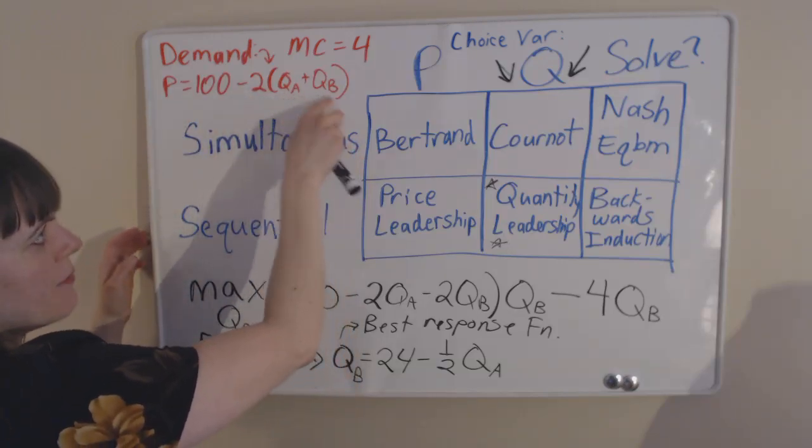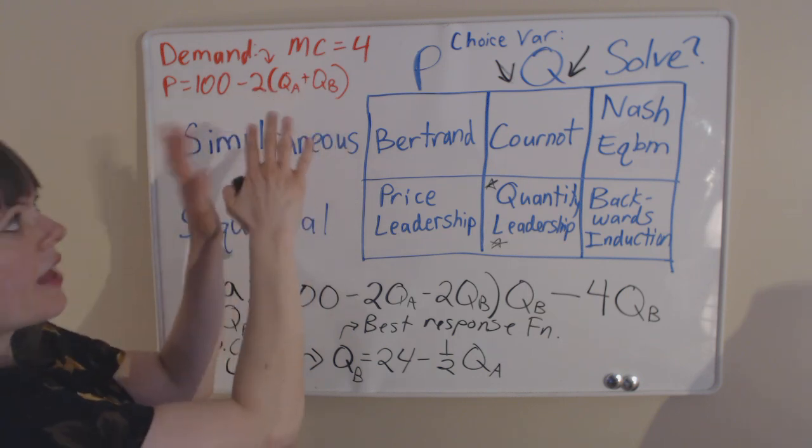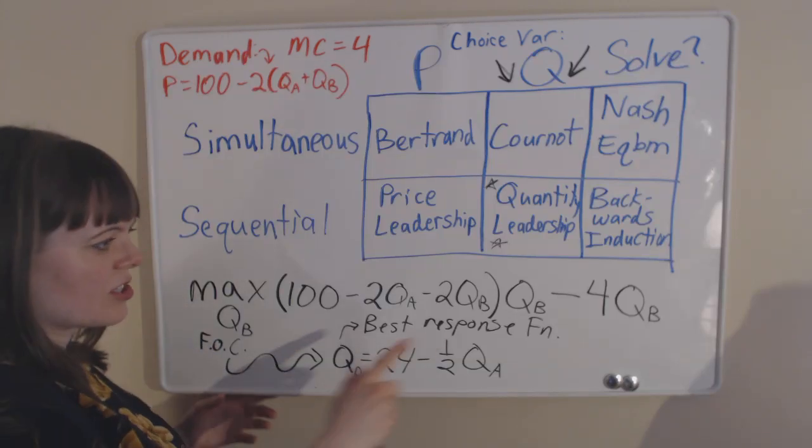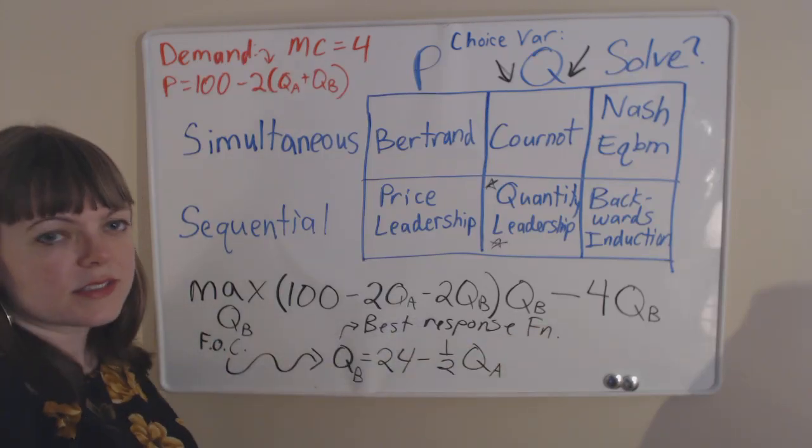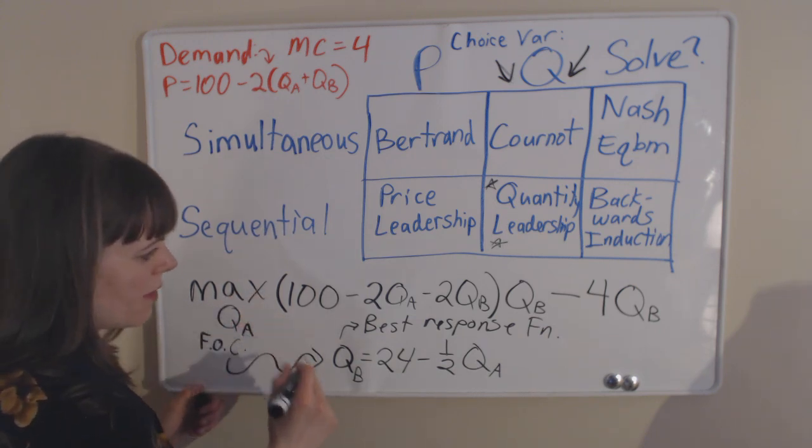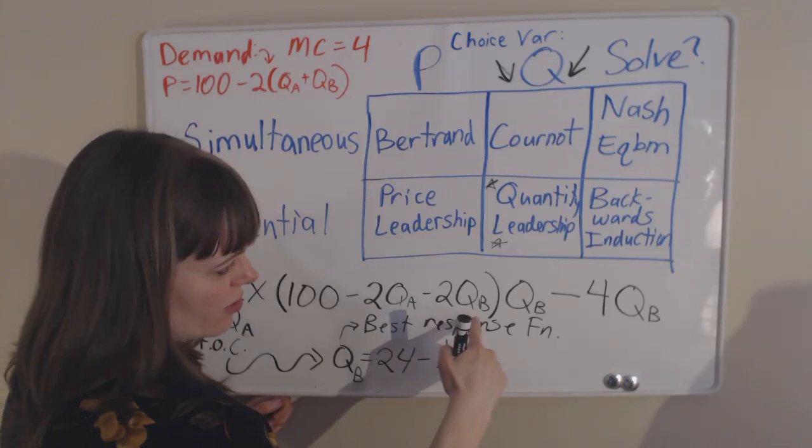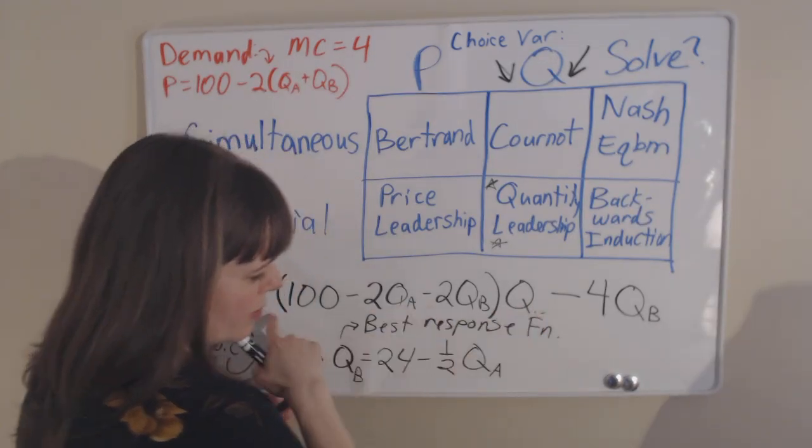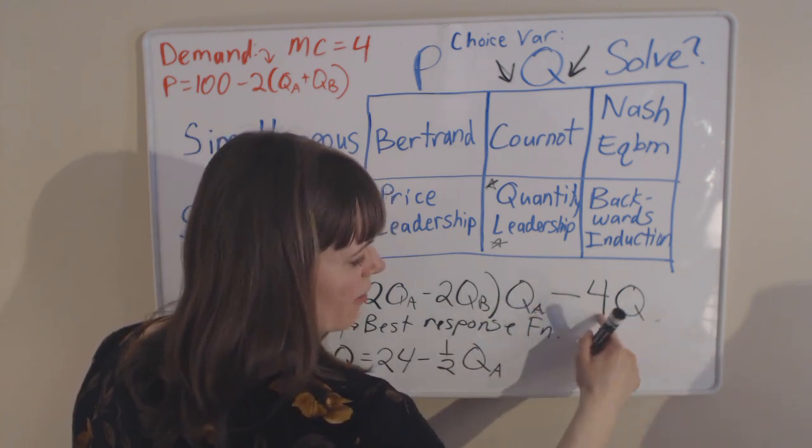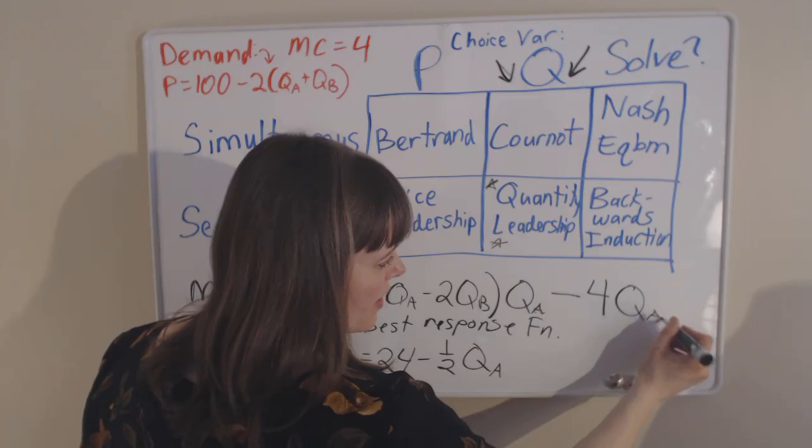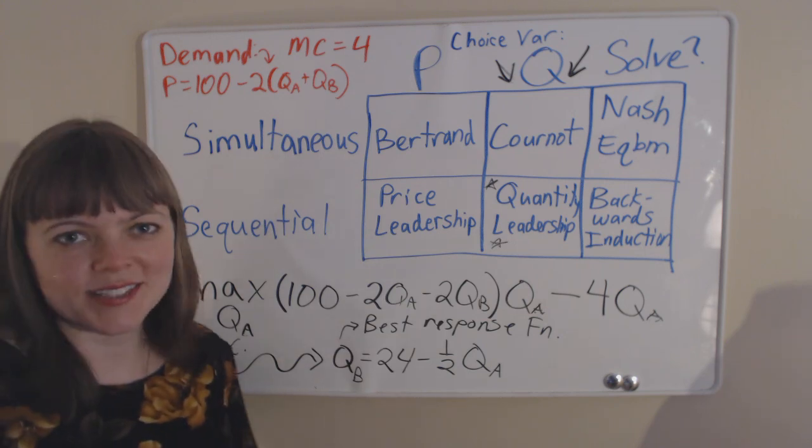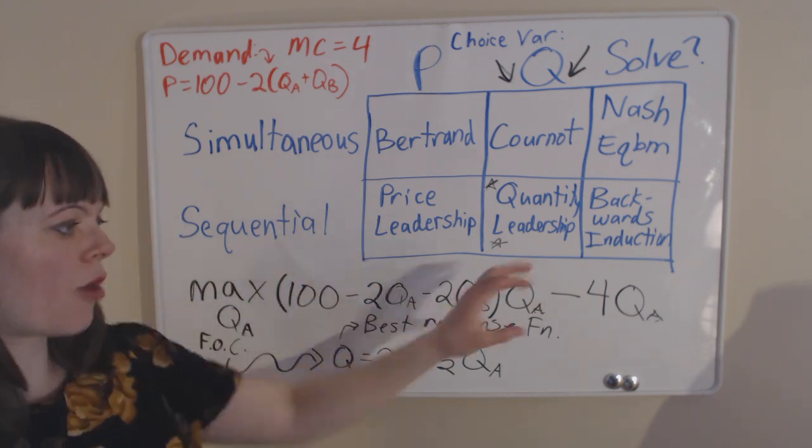What does firm A's maximization problem look like? Well, this is a symmetric problem. The demand curve is the same. If you switch to A and B, that demand curve would look the same. So firm A's maximization problem is actually going to look exactly like firm B's, except they're choosing firm A's quantity. They multiply that price times firm A's quantity, and their total costs are $4 per unit times the quantity that firm A produces.